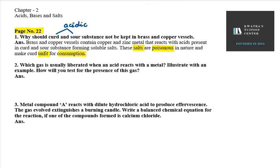Next, which gas is usually liberated when an acid reacts with metal? Acids react with metals, we get hydrogen gas. Illustrate with an example - if I use zinc, zinc is our metal, acid is HCl.